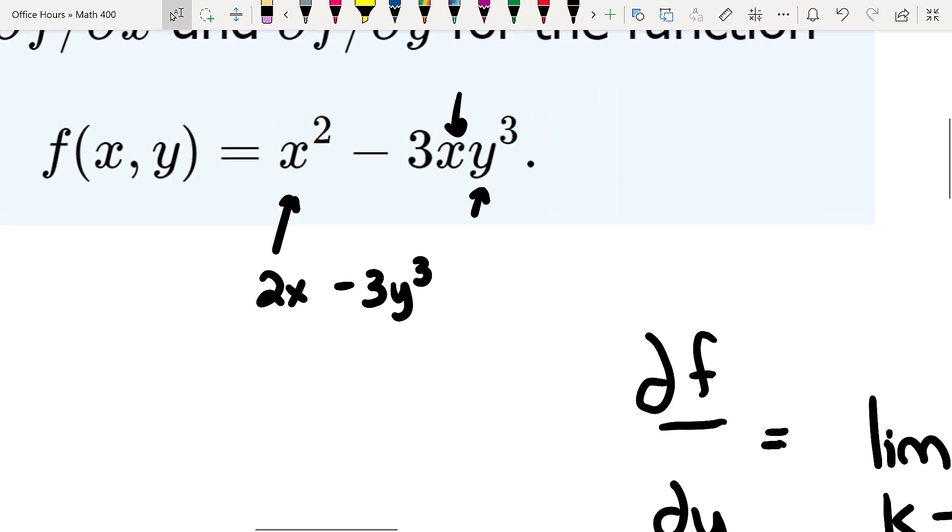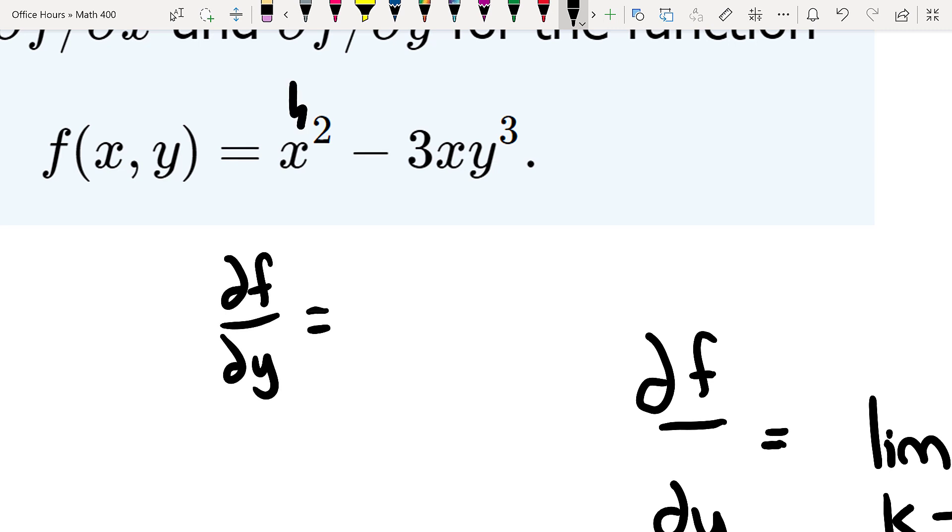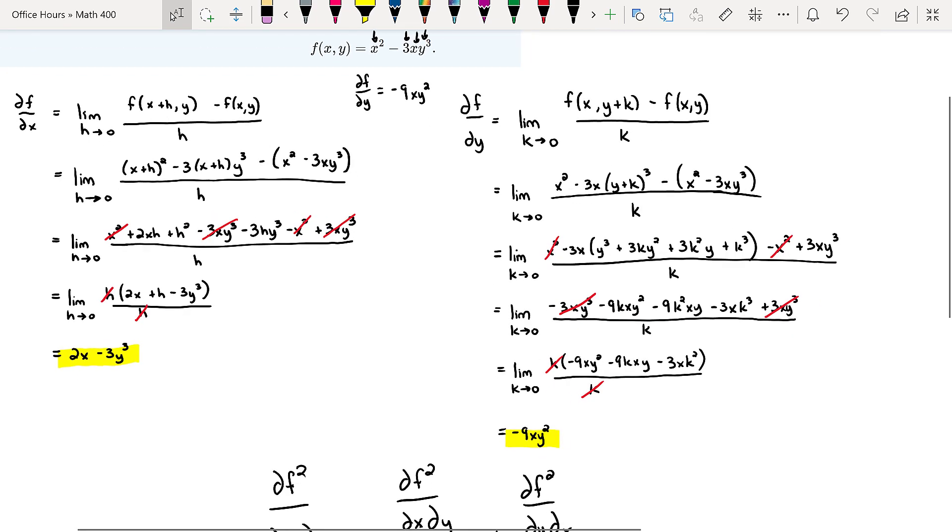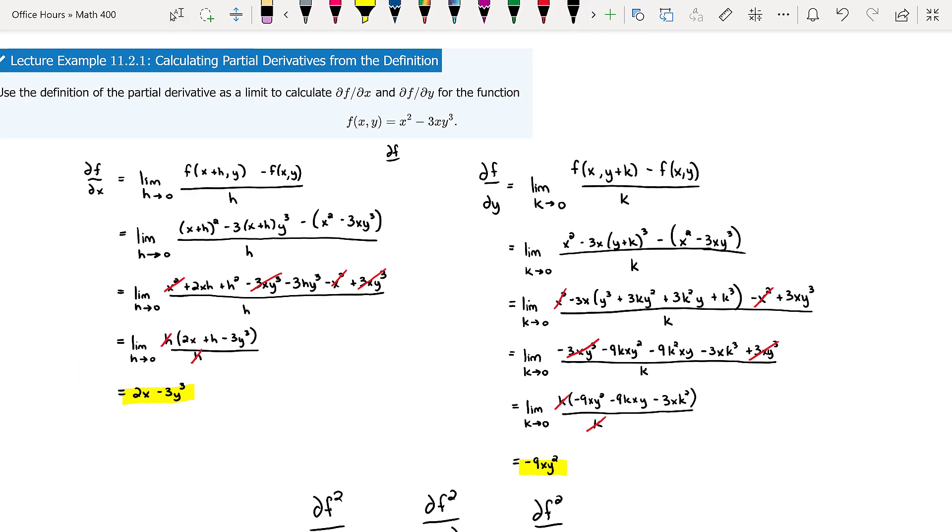Taking the partial of f with respect to y, you hold x as constant and y as the variable. The derivative of the constant x² is zero, and we have -3 times the constant x times y³. Taking that derivative, you get -3 times 3, or -9xy². That's exactly what we got. So this is a very fast way to compute it using standard differentiation methods, but you still need to know the limit definition for more theoretical applications.